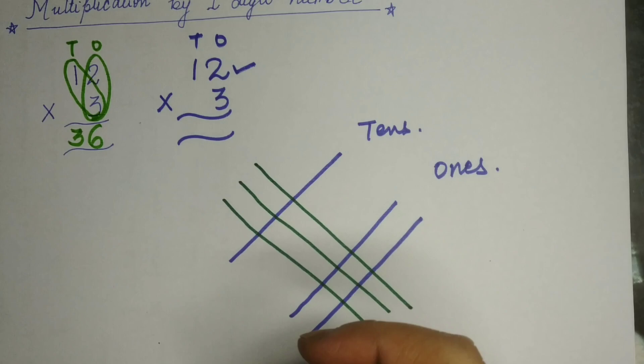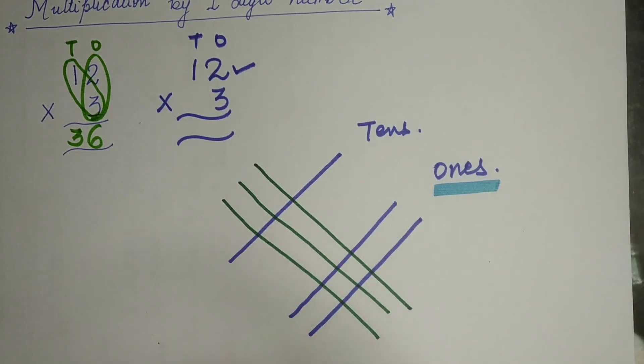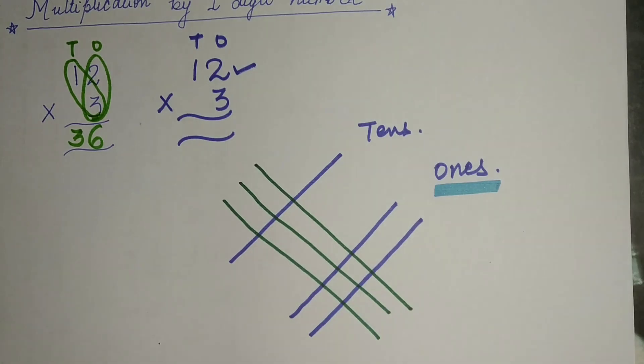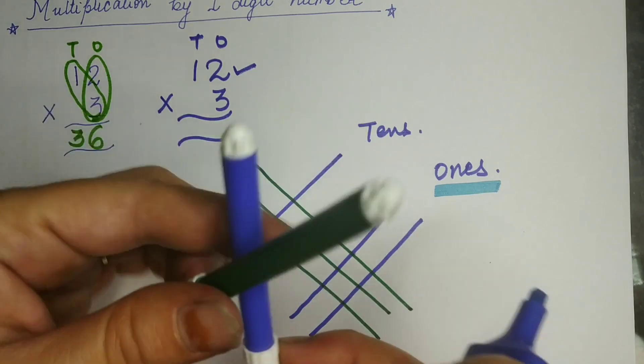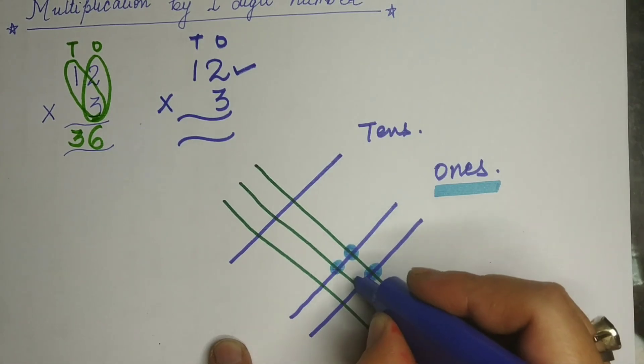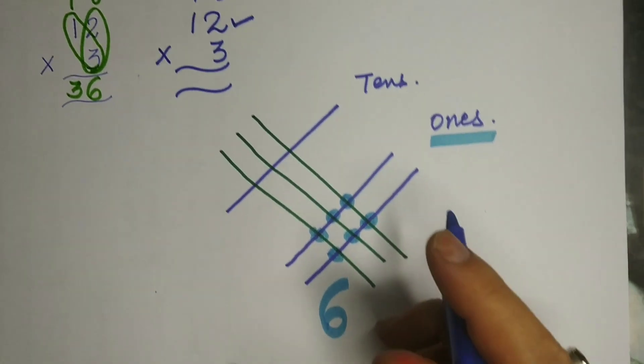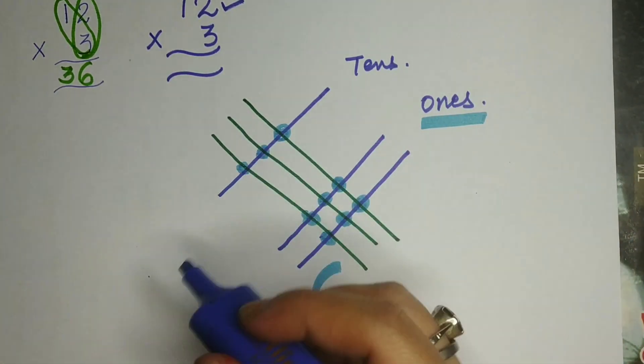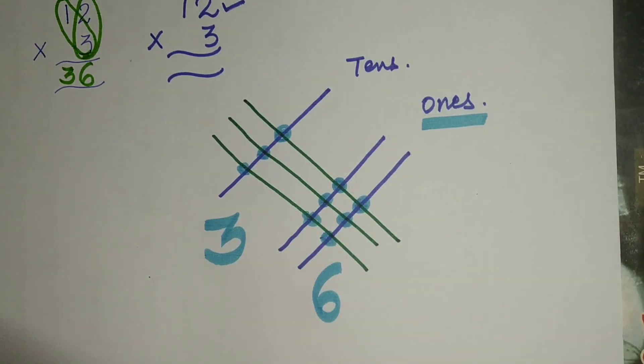Now what you have to do first of all, you have the ones digit. Count first the ones, the same way which we have already done that activity which we have performed on Wednesday. Where the line has crossed this way, that dot you have to count. 1, 2, 3, 4, 5, 6. How many dots are there? That is 6. Now we have to count the tens value. 1, 2, 3. How many dots? 3. Now you can write the answer.